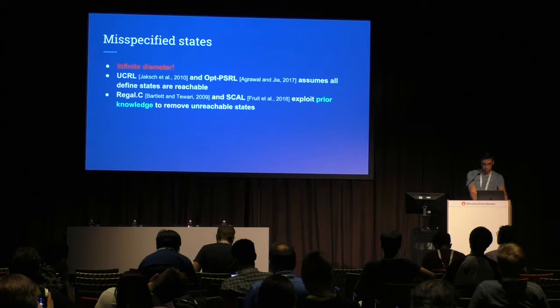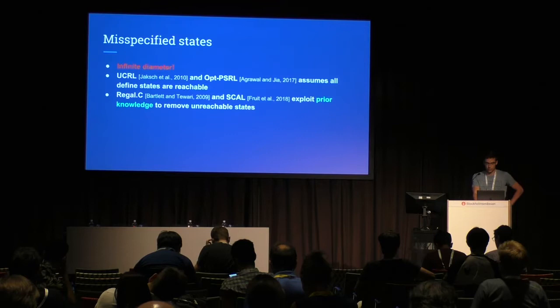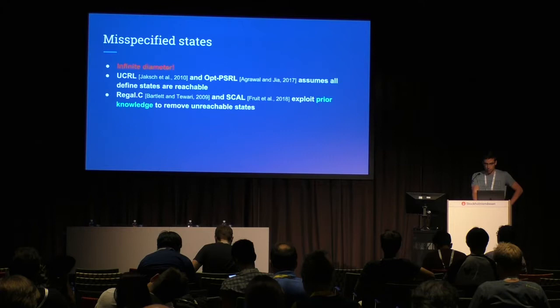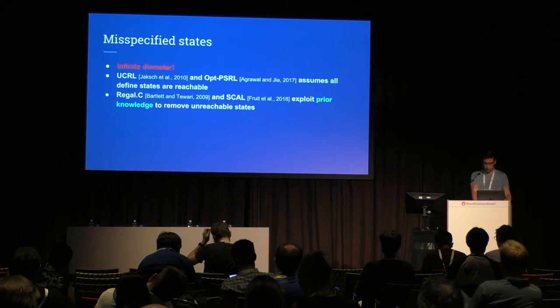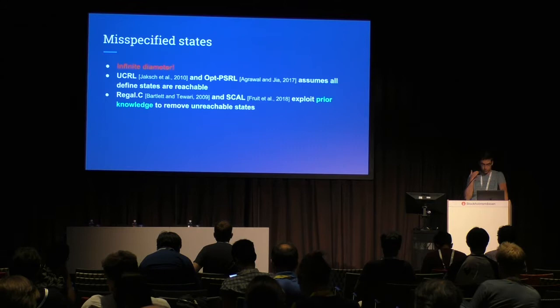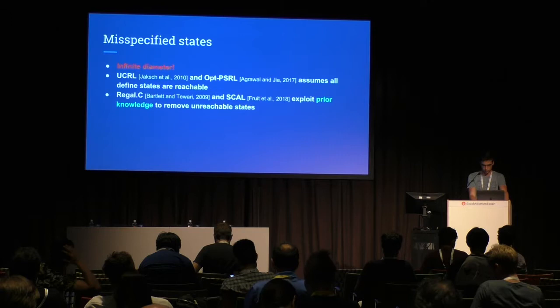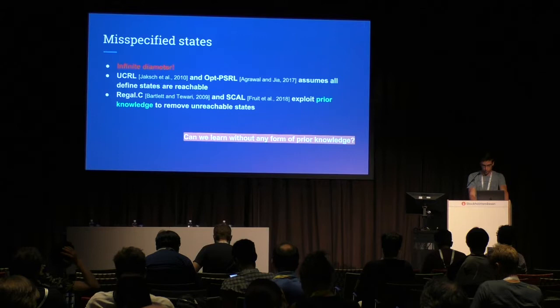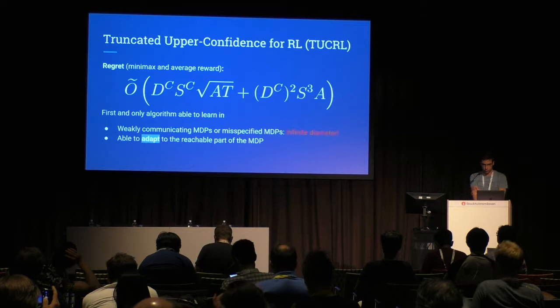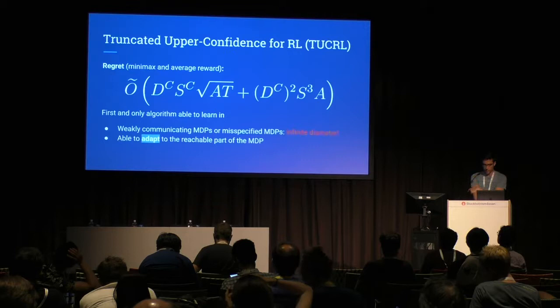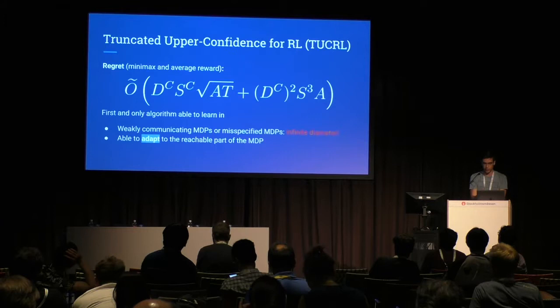With an infinite diameter, all algorithms with theoretical regret guarantees — like UCRL or optimistic PSRL — will fail to learn and suffer linear regret. The idea of this work was to achieve a square-root-T regret without leveraging any form of prior knowledge, unlike the previous span constraint algorithm. We present an algorithm that without prior knowledge achieves square-root-T scaling — with the diameter restricted to a specific communicating area of the MDP.